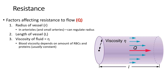By regulating the radius of their lumen, arteries control the amount of flow. As we decrease that radius — meaning we constrict that vessel — we increase resistance. But if we dilate that vessel or increase that lumen, we decrease resistance and make it easier for blood to flow.